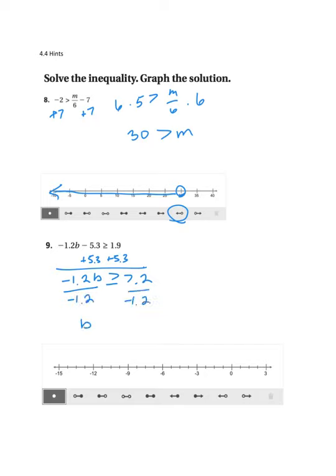And I get b is, I have to switch my inequality sign here. And then I'm going to divide 7.2 by 1.2. And I know that 72 divided by 12 is 6. So this will be b is less than or equal to negative 6.